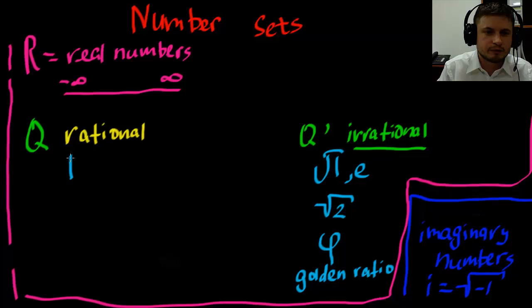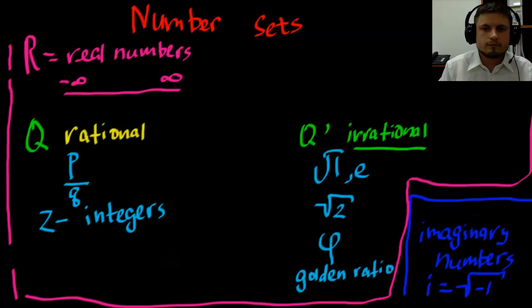And the rational numbers are represented by two integers. And so our rational numbers can also be further divided into integers which are represented by Z. So these are integers. And then the integers actually contain all of the natural numbers. So natural numbers are also part of the integers.